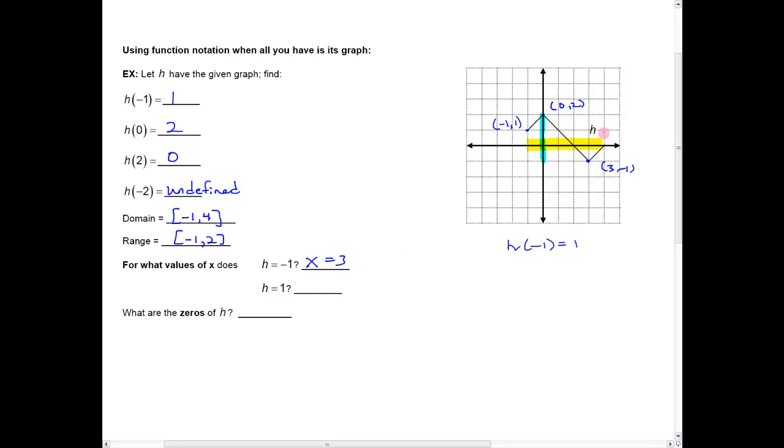Where h is 1 up here, you can see there's actually two values, isn't there? Over here at 1, the output's 1. And over at negative 1, it's 1.